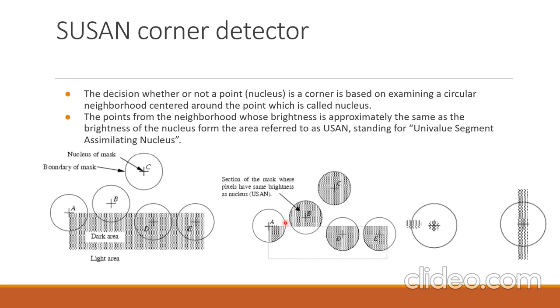But the Susan detector fails in several cases. Here we can see some of those cases — the USAN area is very small but the point is not actually a corner point. Here we can also see some of the corner points detected using the Susan corner detector. It almost accurately detected many corner points when there is no noise in the image.